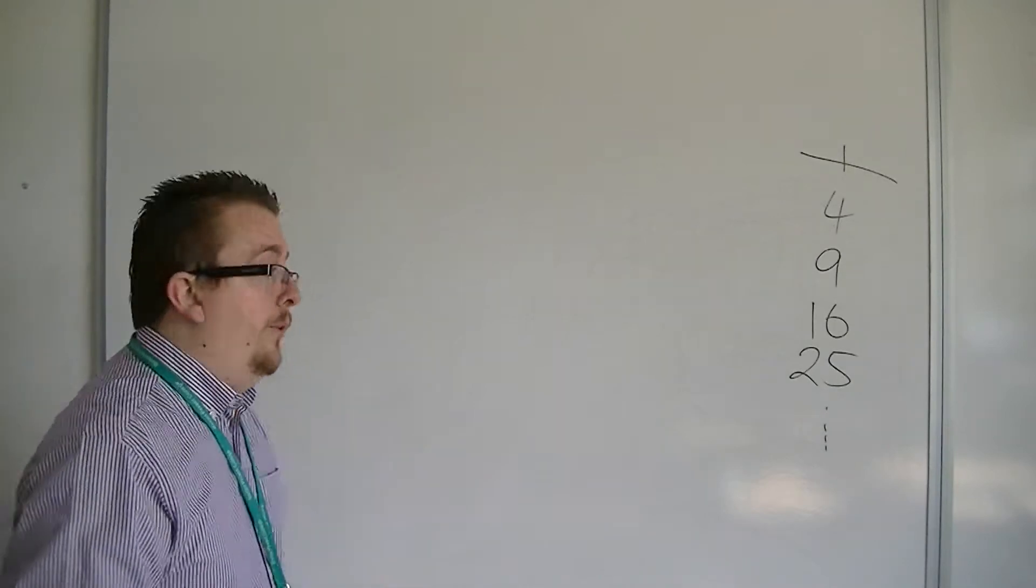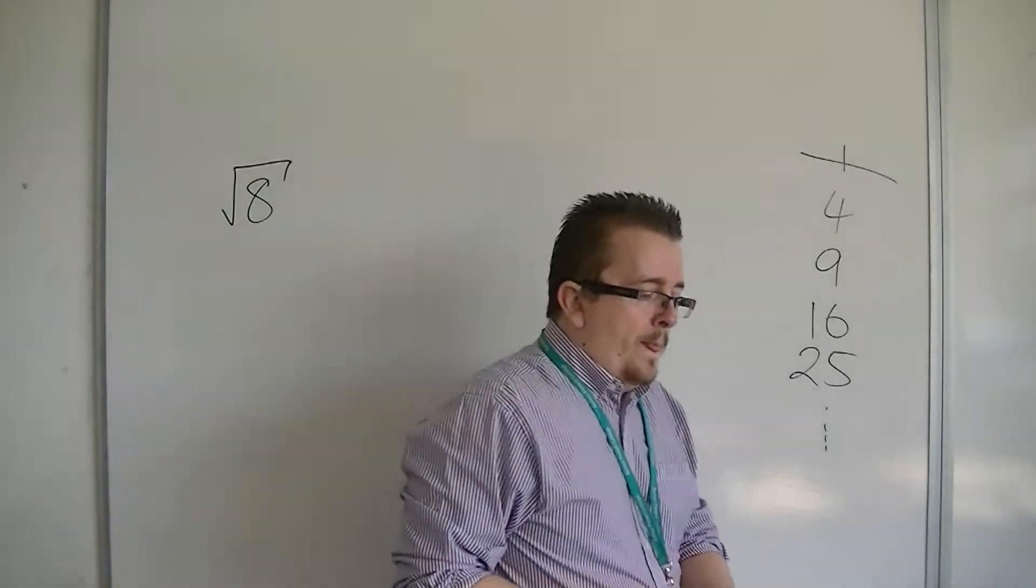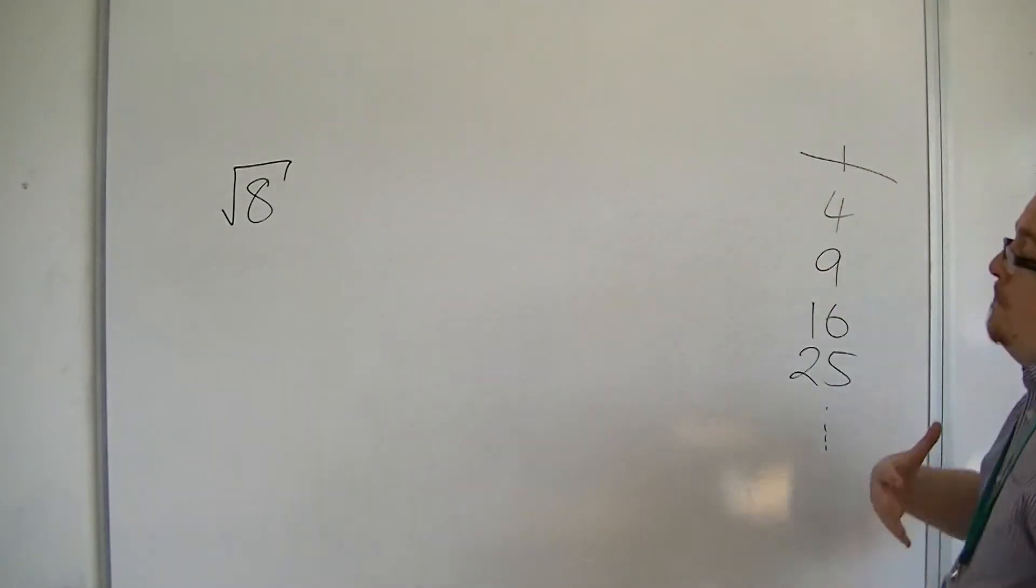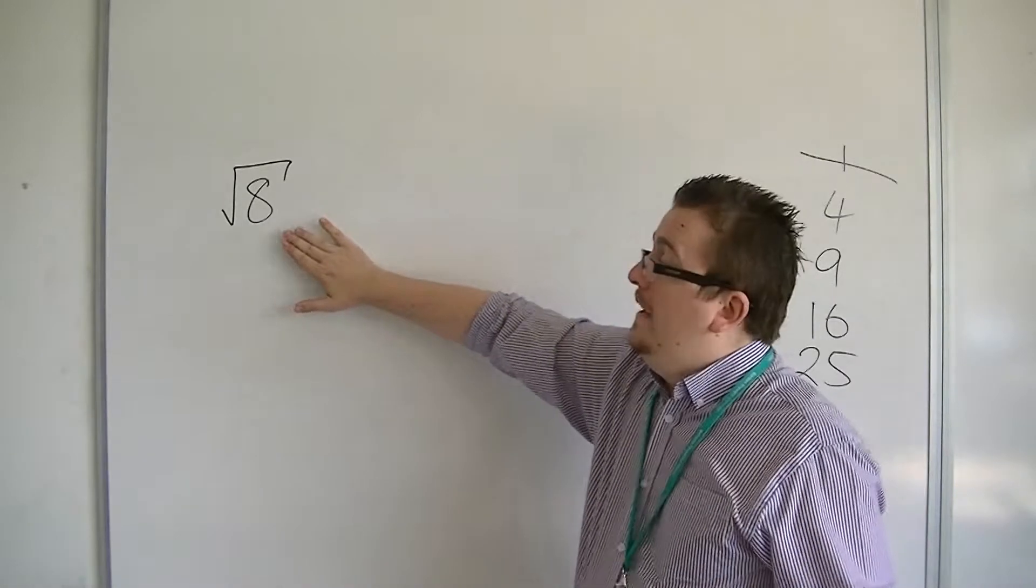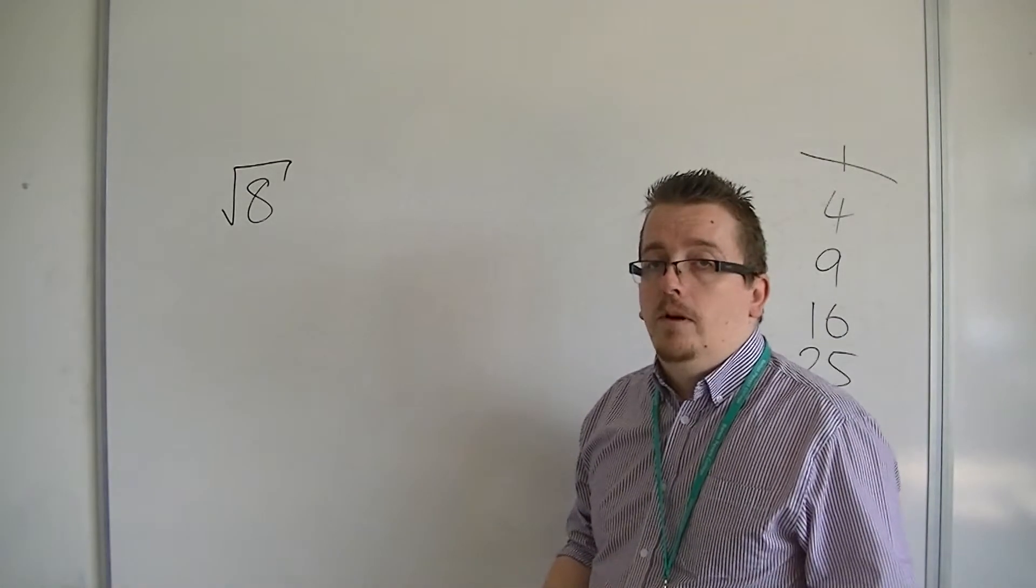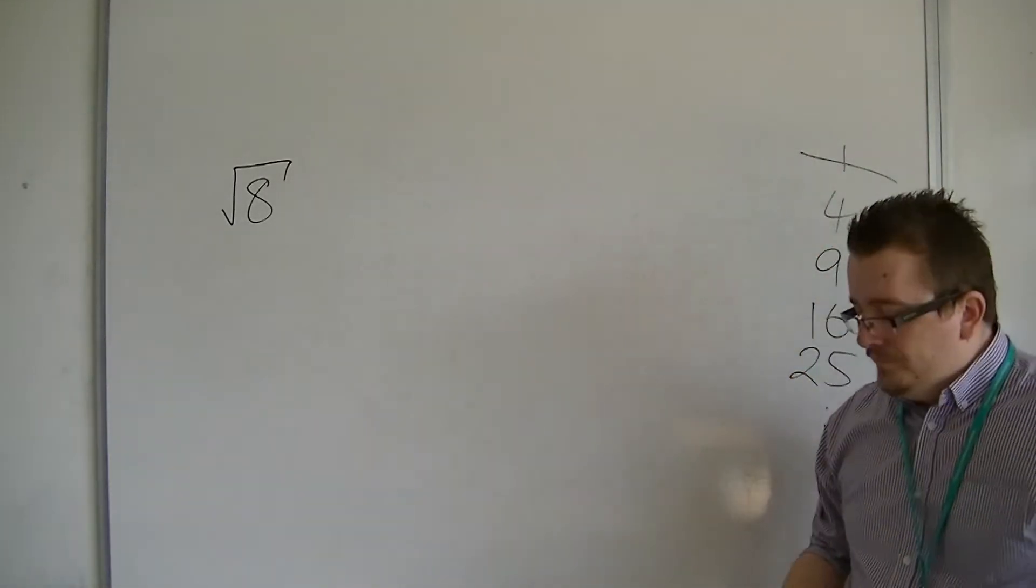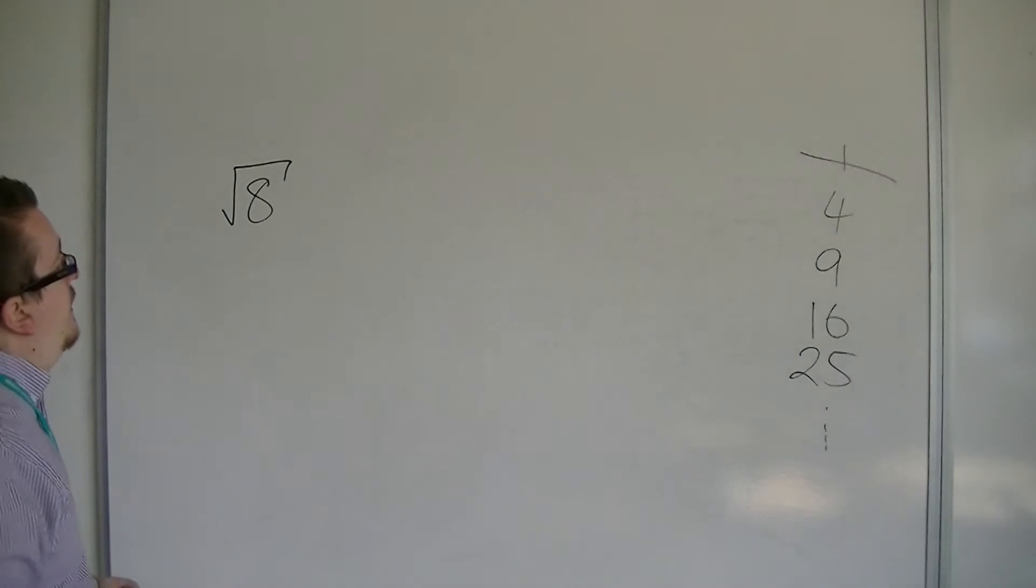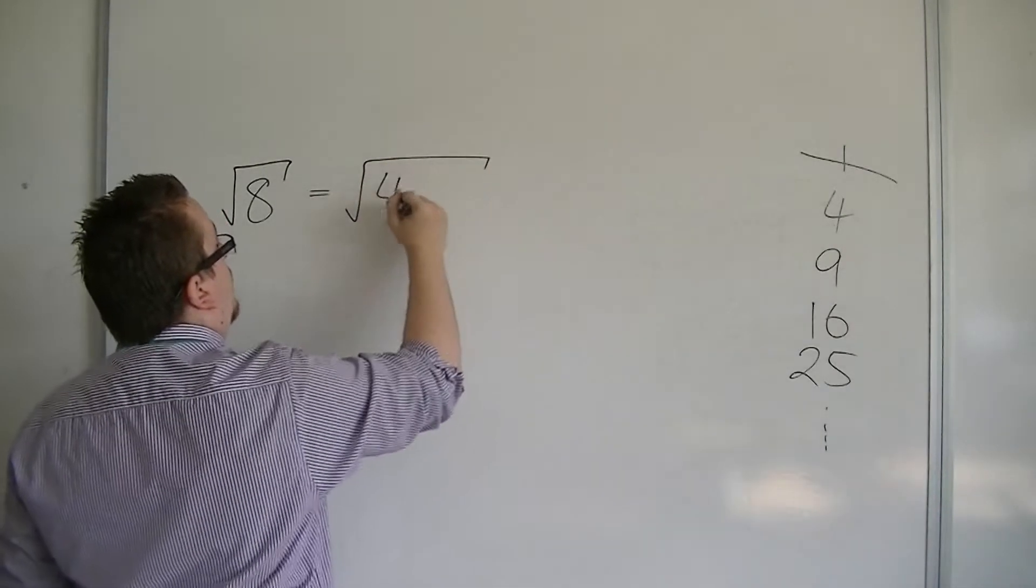So an example of simplifying a surd would be looking at the square root of 8. Now, we know that this is an irrational number because 8 isn't a perfect square. 8 isn't a square number. So what can we do to simplify it? Well, we can use a trick that will allow us to do this, whereby I can say root 8 would be the same as looking at the square root of 4 times 2.